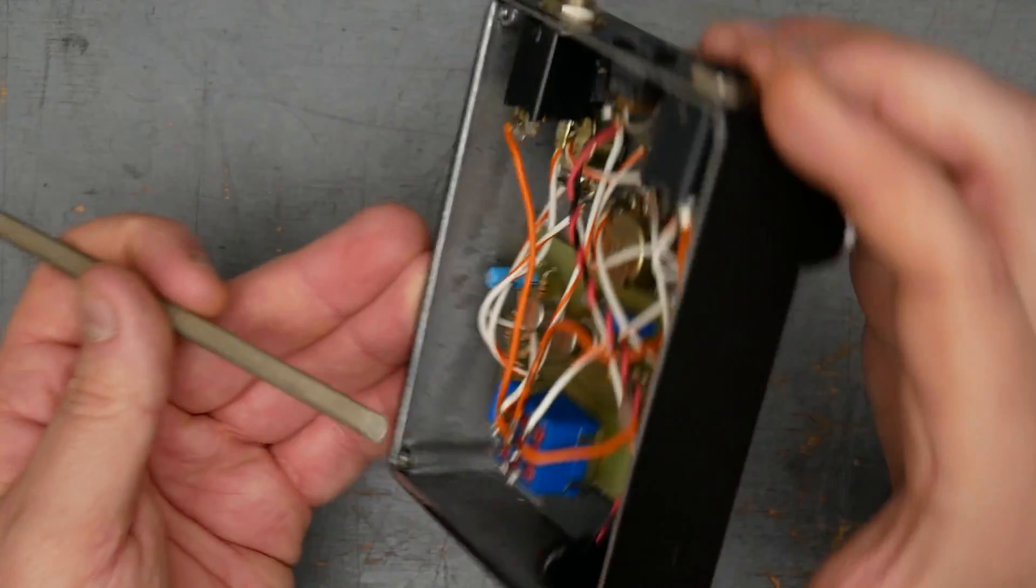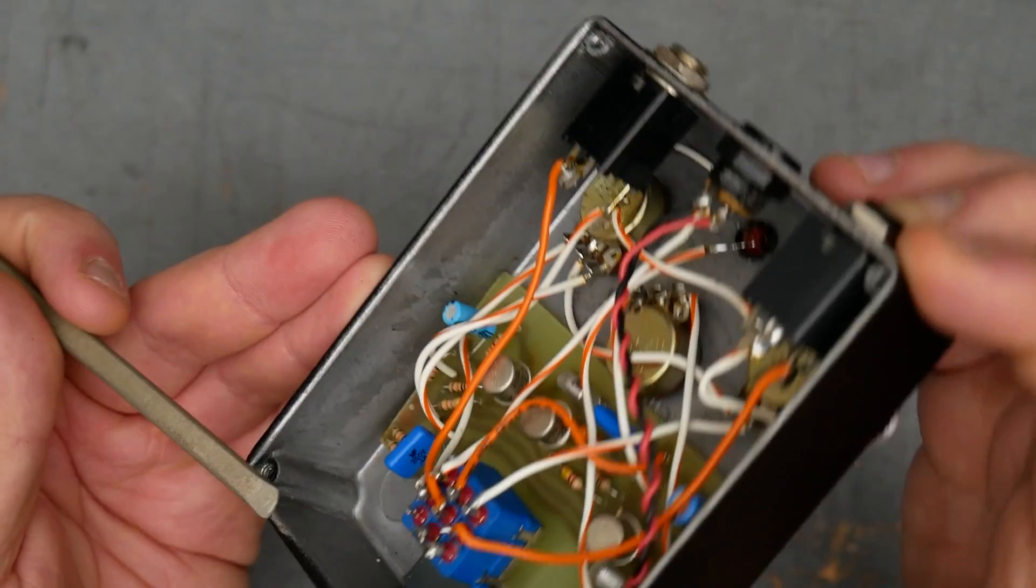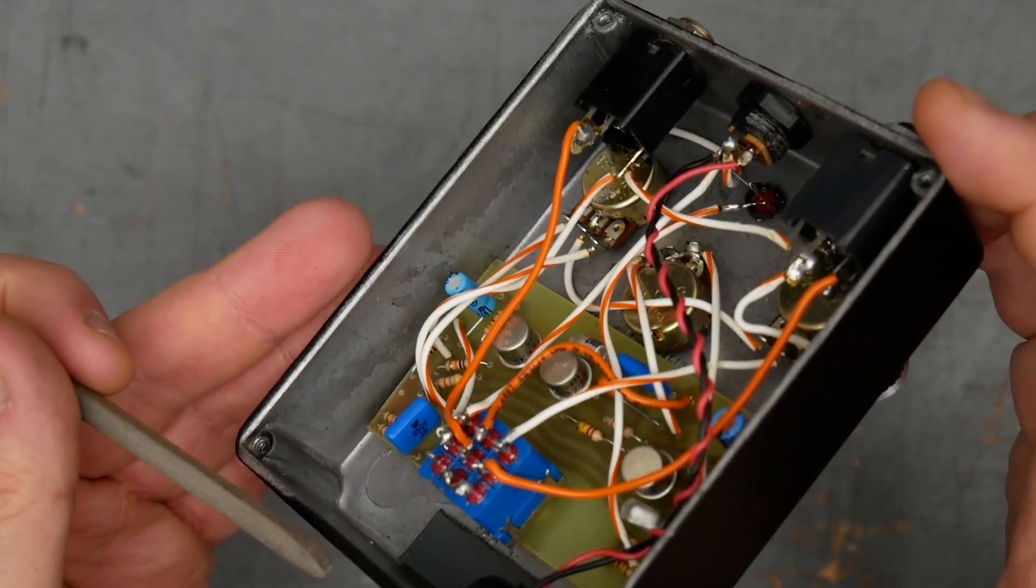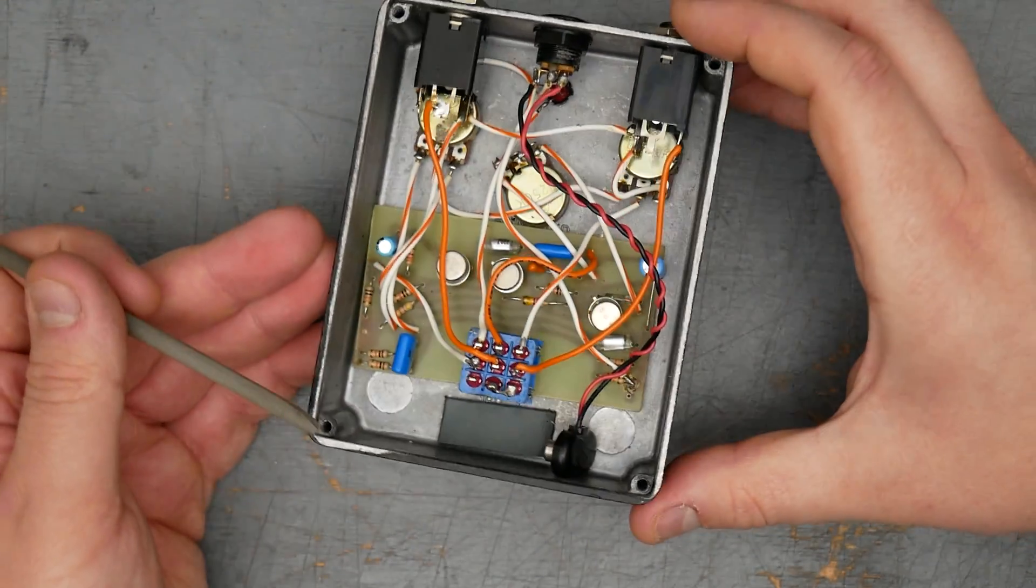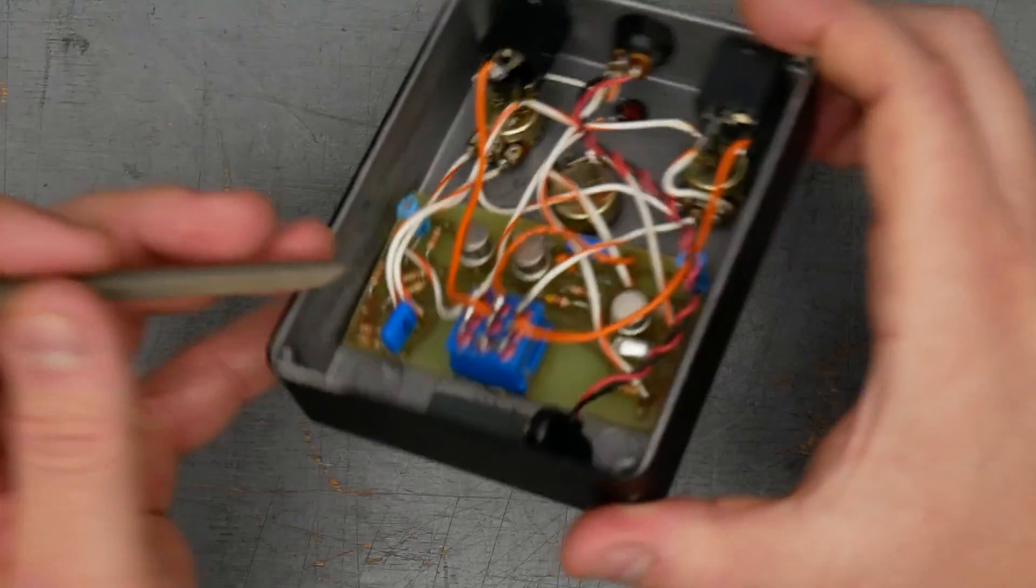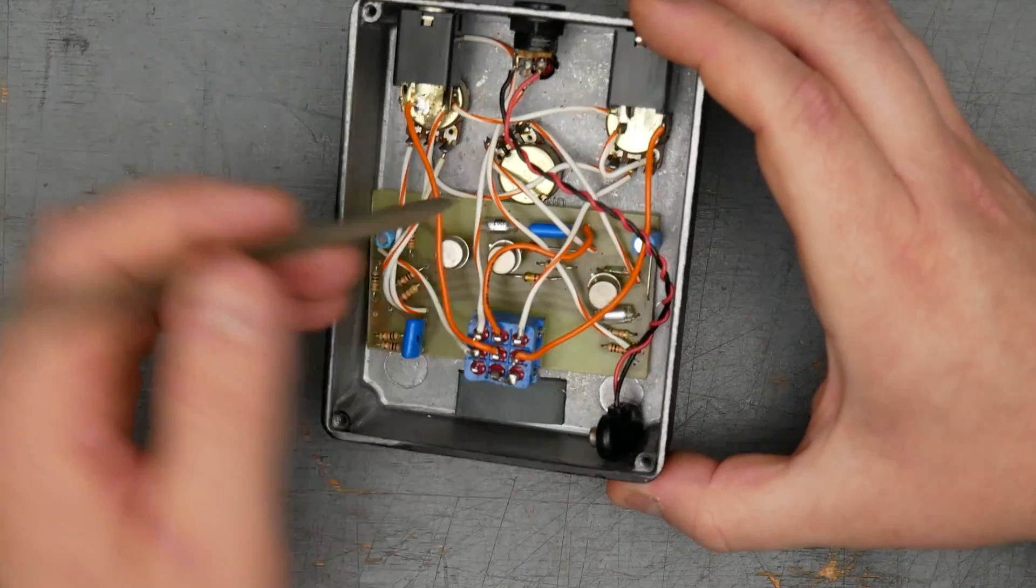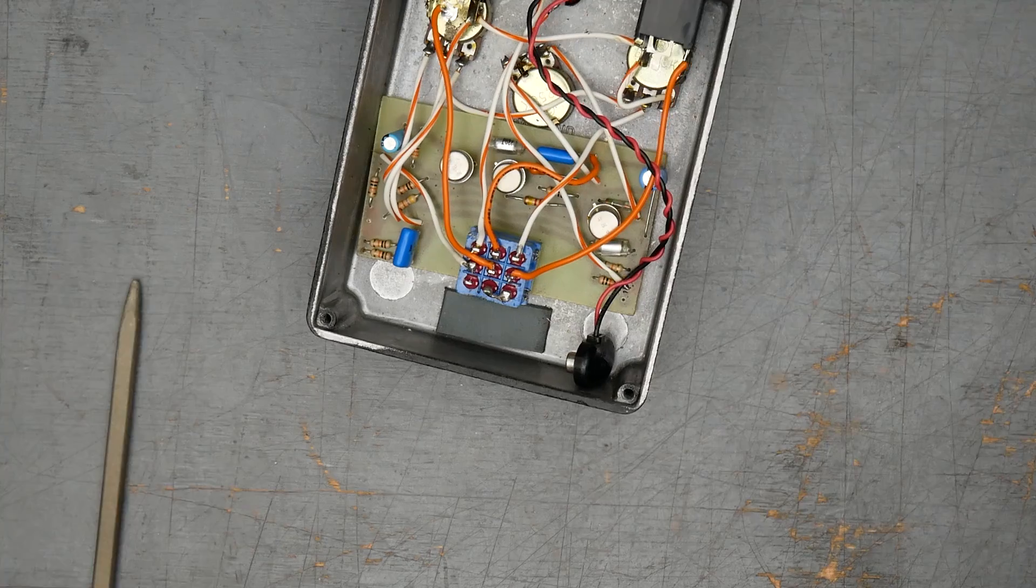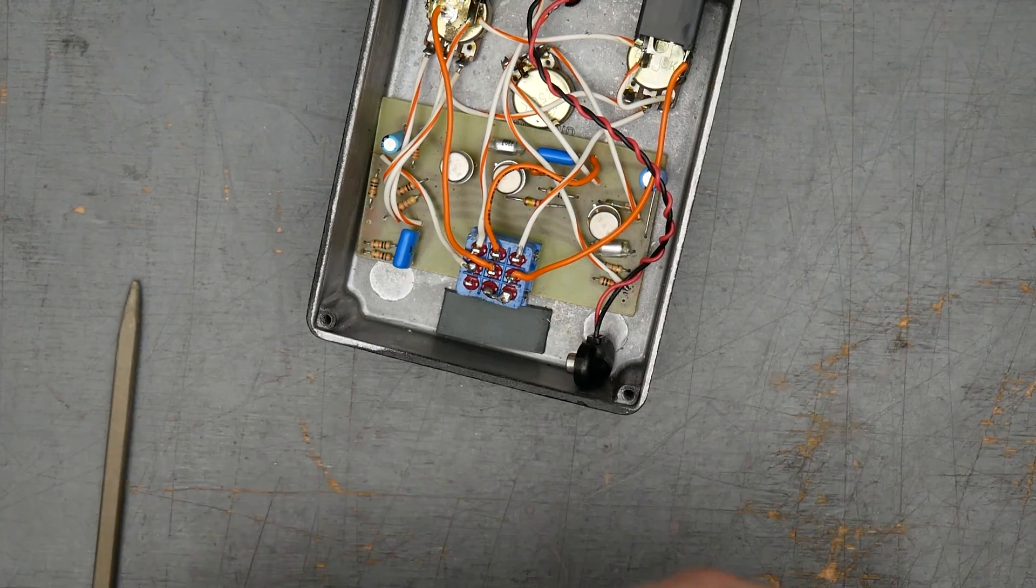For transistors, these are marked SK3722. A couple of them have the day code, or at least what looks like a day code, 9431. So 31st week of 1994. The enclosure itself, I can see the Hammond logo down there. So this is a Hammond brand 1590BB. We've got a little piece of foam here for a battery. We drop the battery in there. It'll help keep it from rattling around.